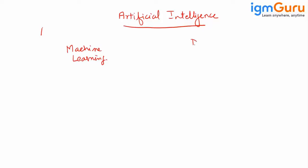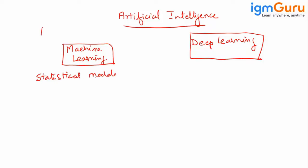And you have deep learning. If you use statistical models, then it is machine learning. If you use artificial neural networks, then it is known as deep learning.